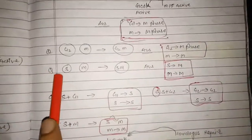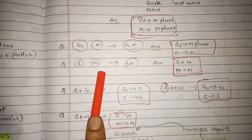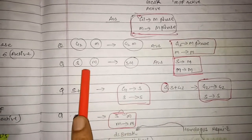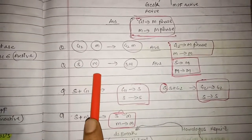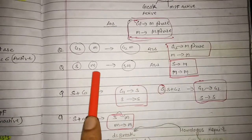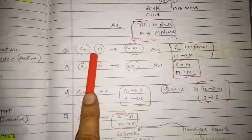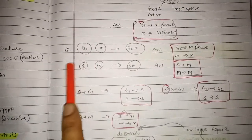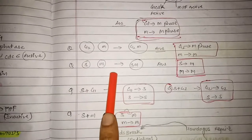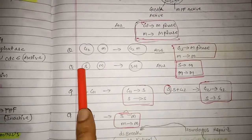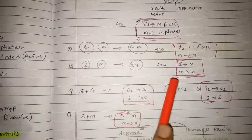Now let us look at the third condition. Here the S and M phase cells are fused together — what will happen? The sequence is G1, S, G2, M. But as MPF is active, the G2 phase will be skipped and the S phase cell will directly enter into the M phase. It will skip the G2 phase as MPF is active. So the S phase stage will enter into M phase, and the M phase will remain in the M phase itself.